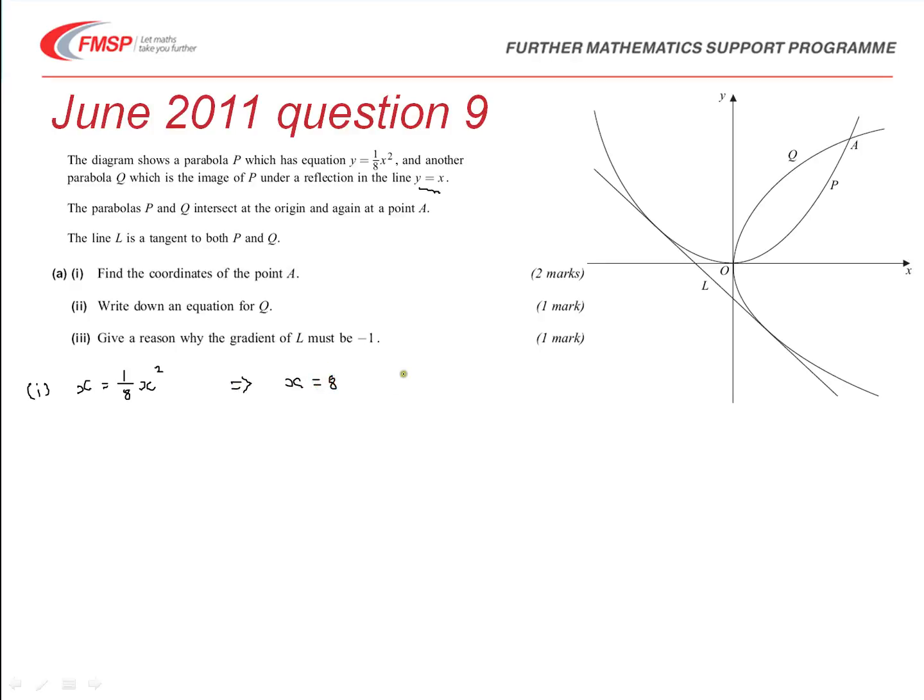And so, we were asked to write down the coordinate of A. So, A must be the point where x is eight, and if it lies on the line y equals x, it must also, therefore, have a y value of eight. So, two marks for this part, so there'd be a method mark for establishing an appropriate equation in order to find x, and then, obviously, an answer mark for getting the correct answer to the problem.